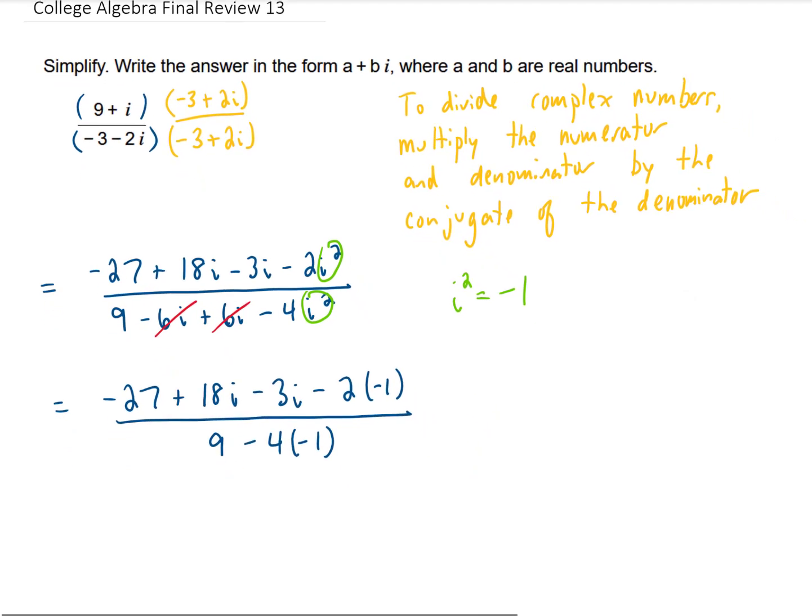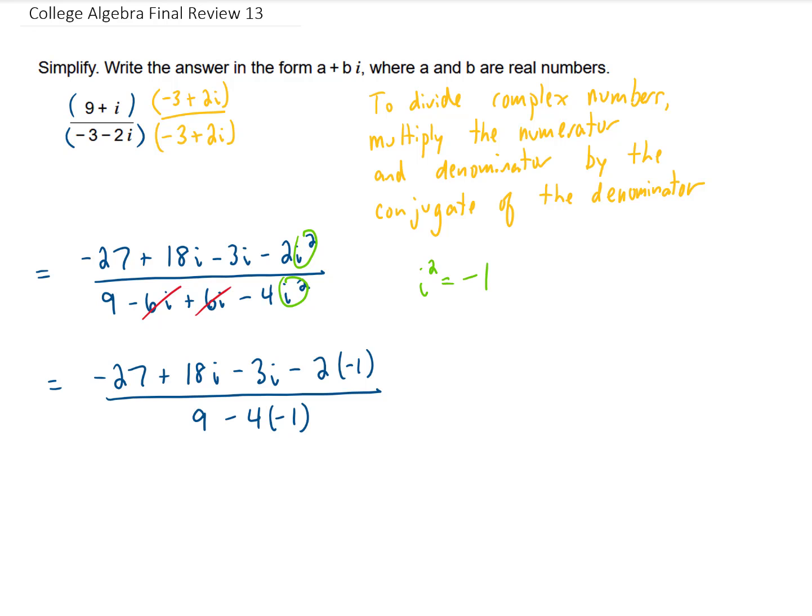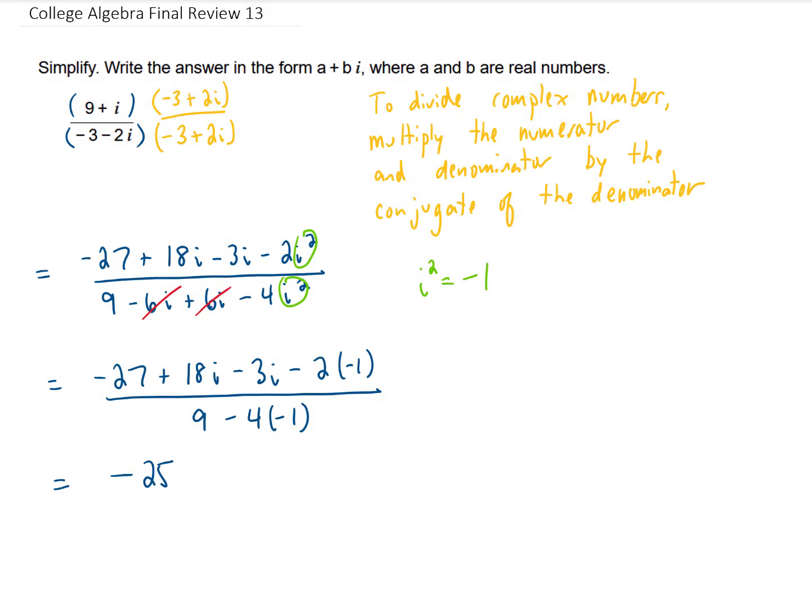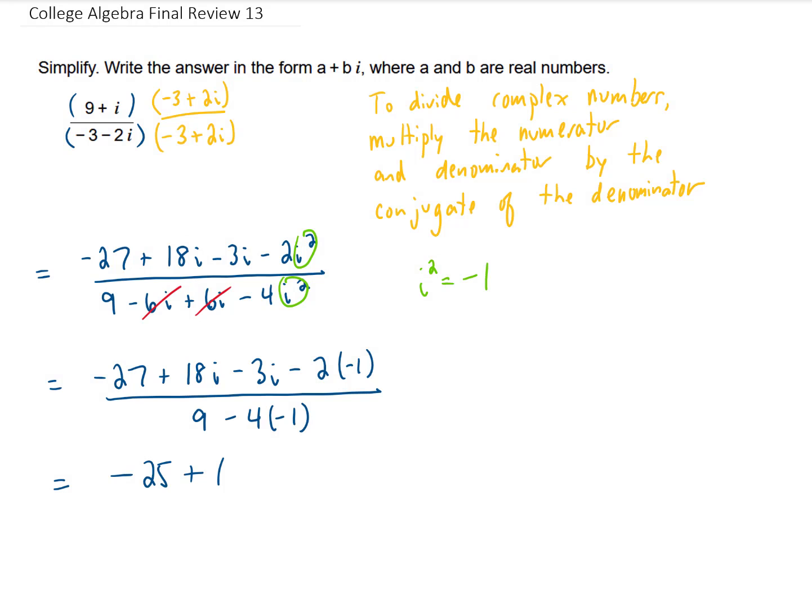Now, we can combine like terms in our numerator and our denominator. Negative 27 plus 2 is going to give us a negative 25. 18i minus 3i is going to give us a plus 15i. In the denominator, we have 9 minus negative 4, which is 9 plus 4, which is 13.